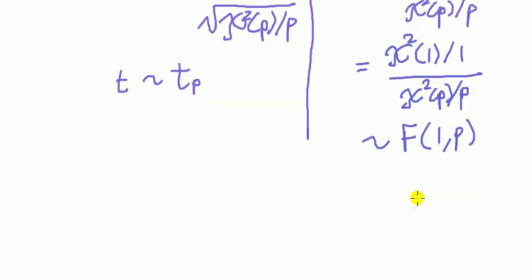In other words, in short, t-squared is equal to f one p.